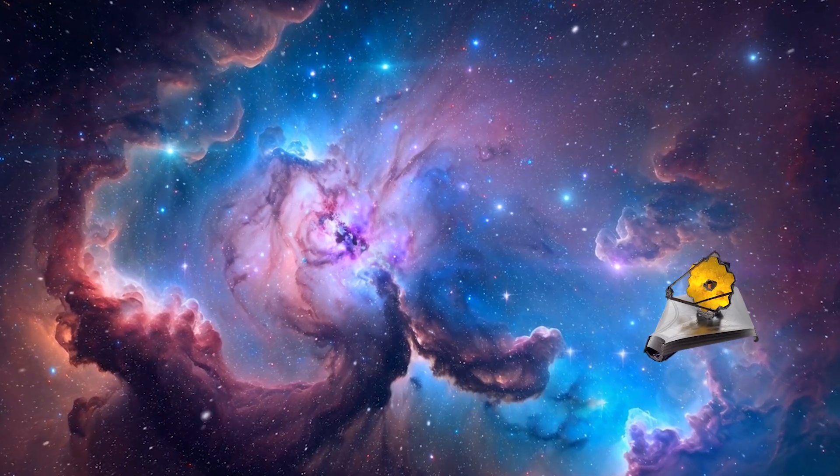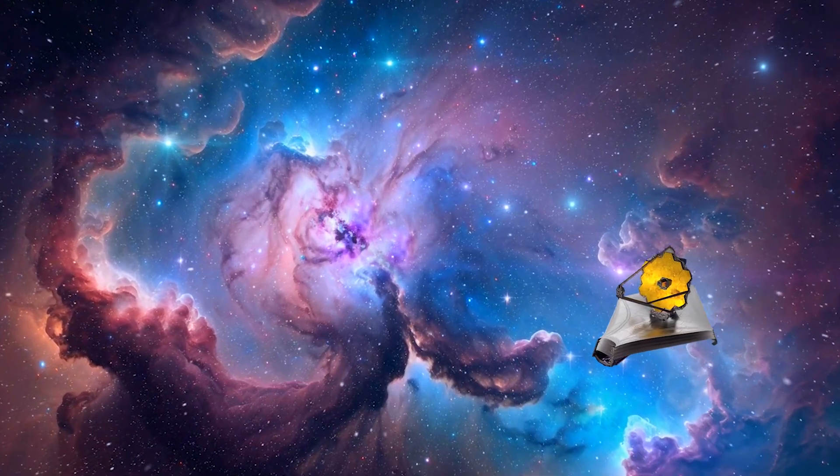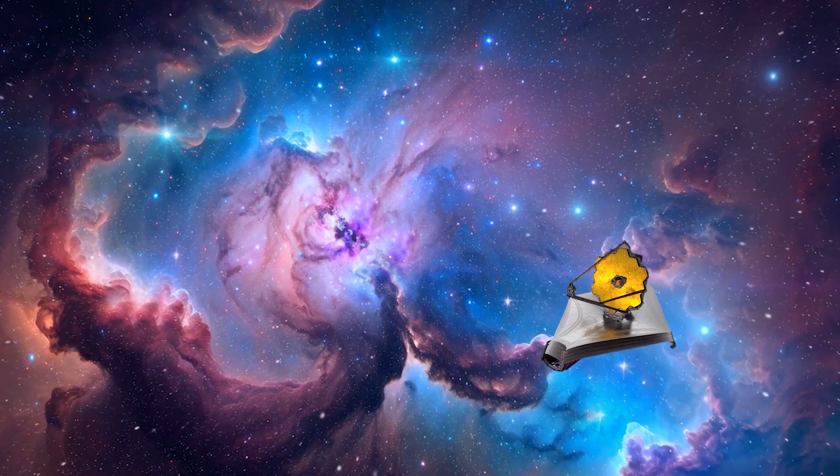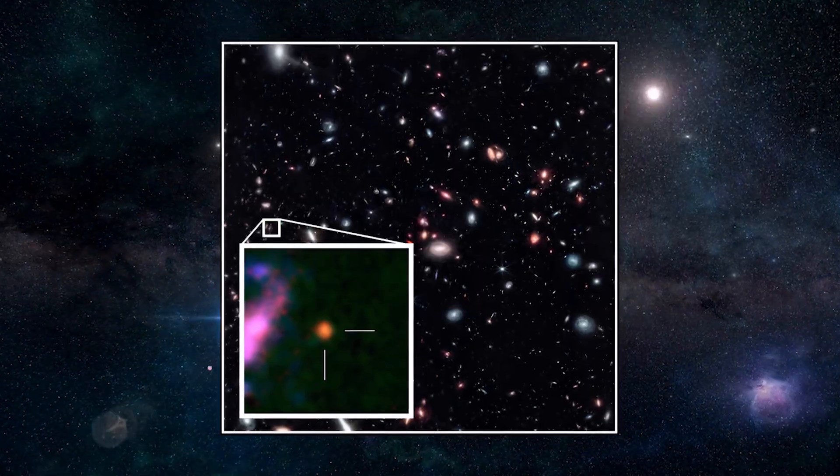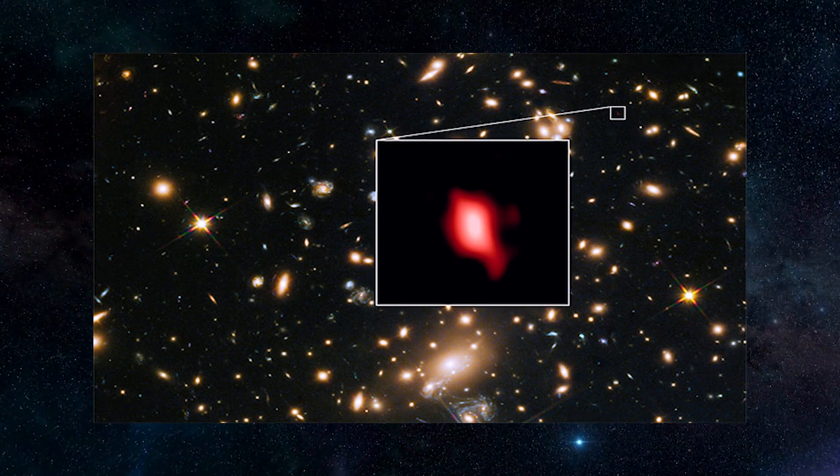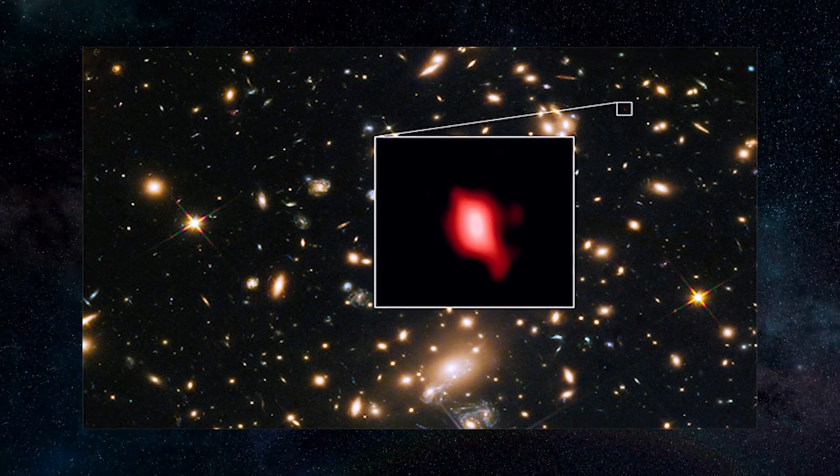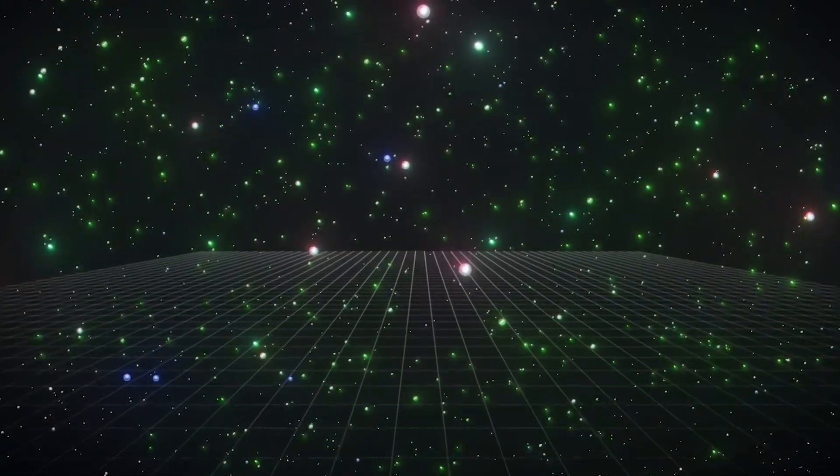Very soon after becoming operational, JWST began to smash cosmic records. Galaxies with redshifts of 12, 13, 14 began to appear in its data. But then came something unexpected.